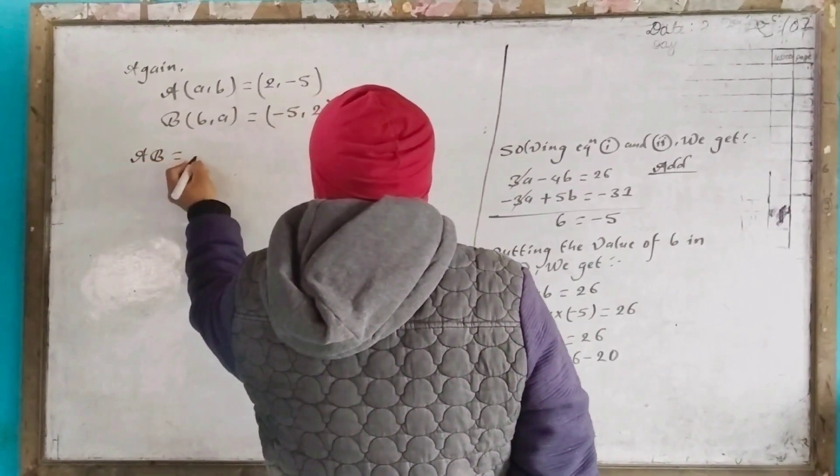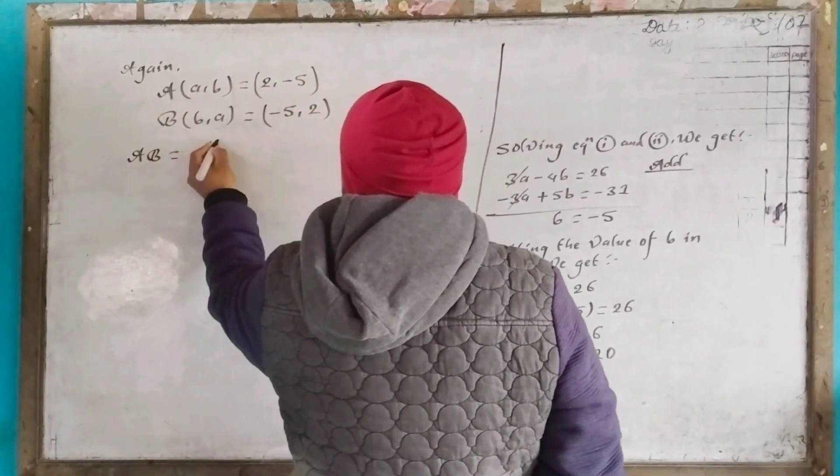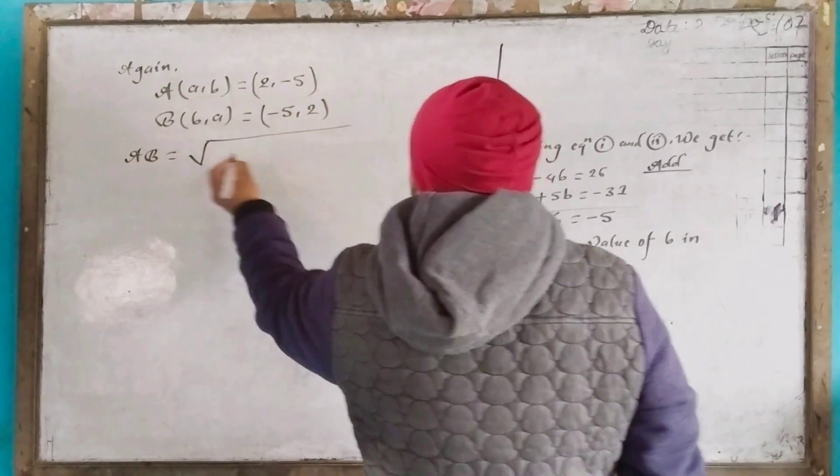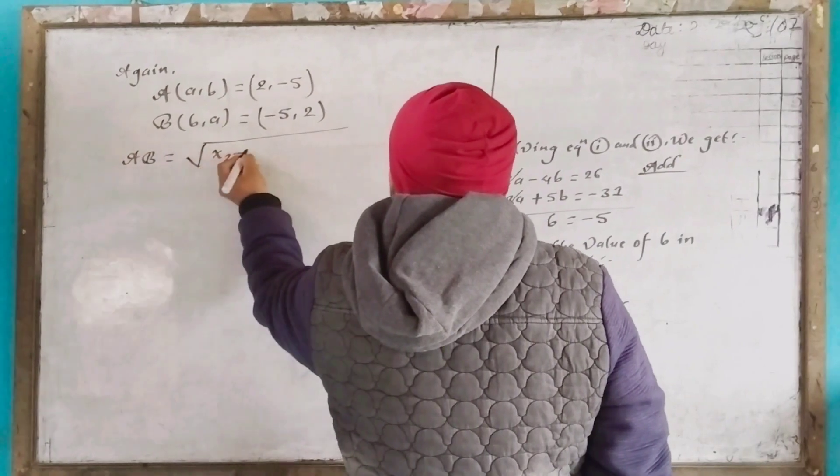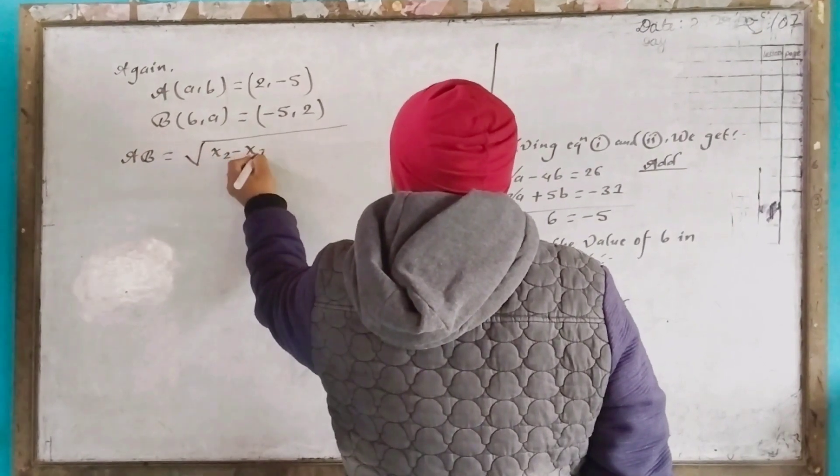Now, the distance AB using the distance formula: square root of (x2 minus x1) squared plus (y2 minus y1) squared.